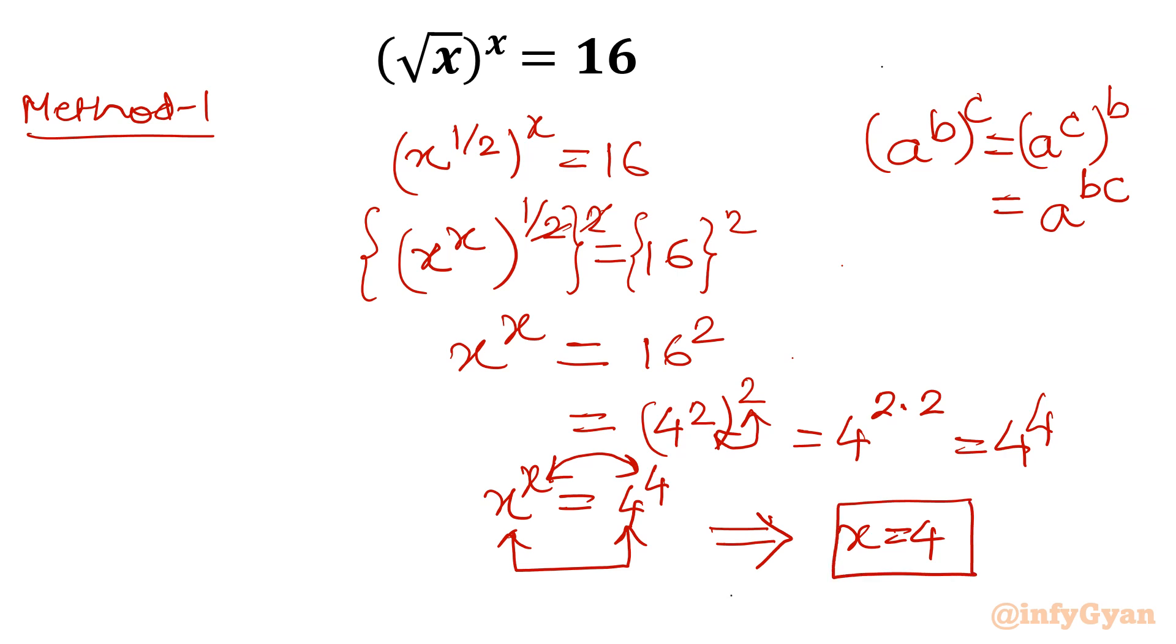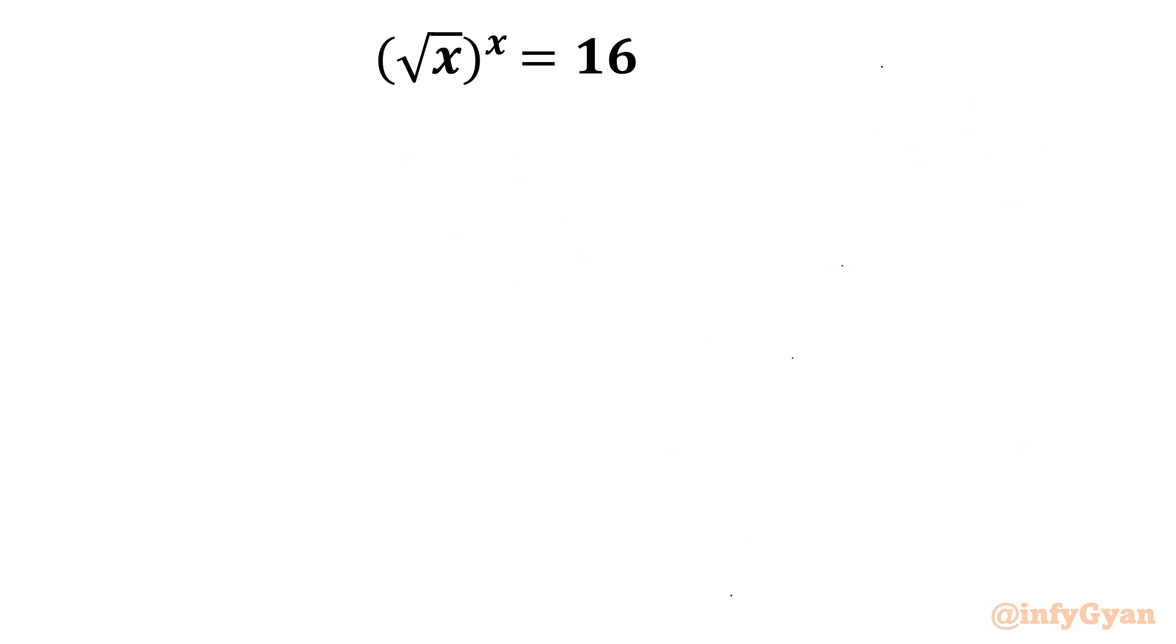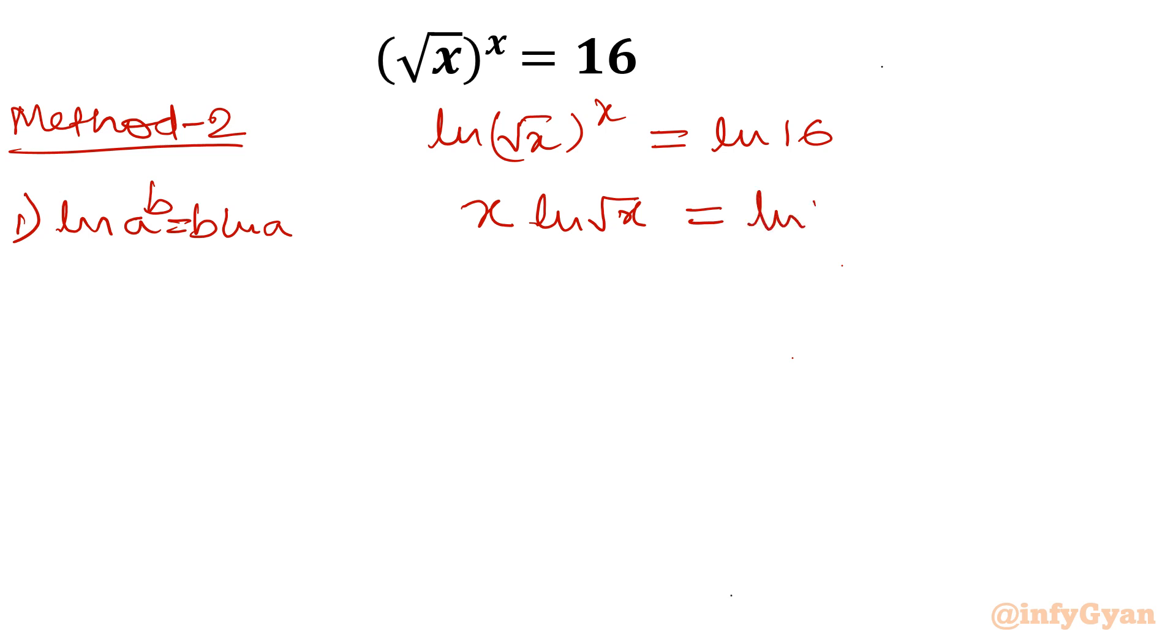Now let us take method 2. Method 2 using log. So let me take ln both sides. So I would write equal to ln 16. Now property number 1: ln a power b can be written as b ln a. So I will write x ln root x equal to ln 16.